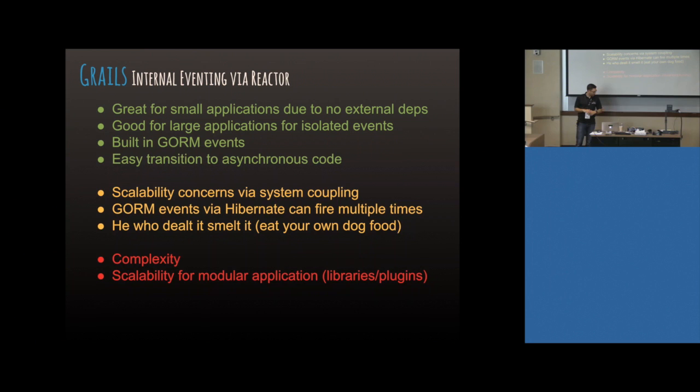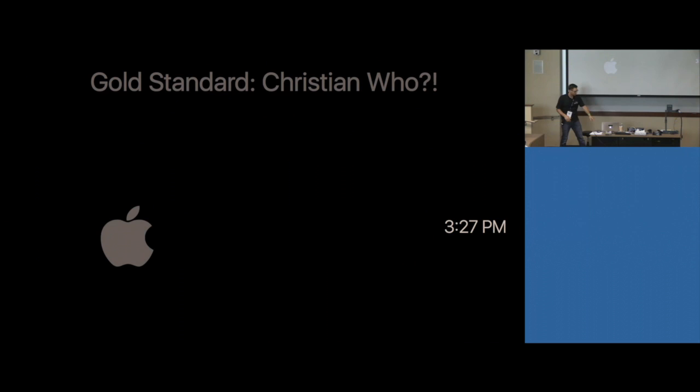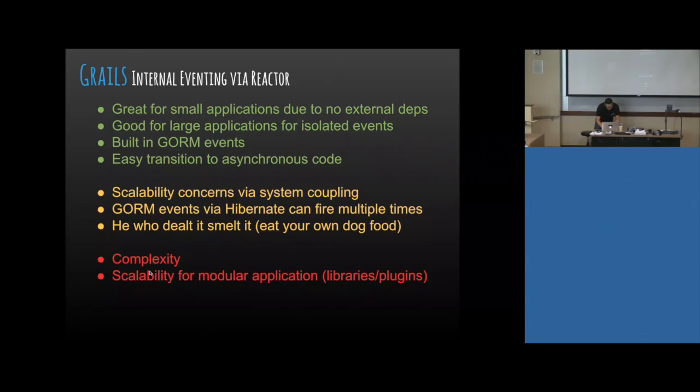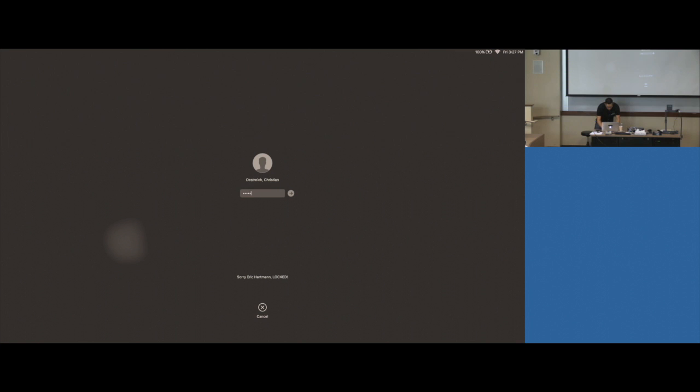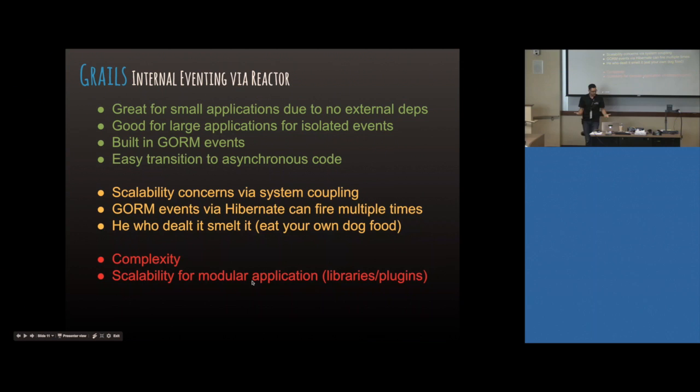Complexity is also a concern. When you have libraries and plugins, how do you know what events they're doing? They might be emitting events you're not emitting. You better have documentation around what events are emitting and consuming, even for self-provided plugins.